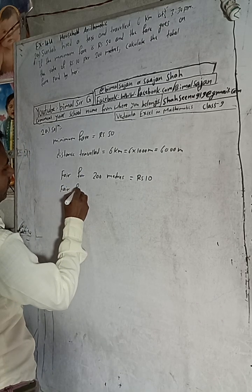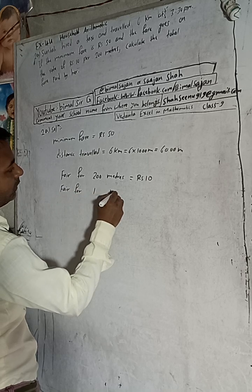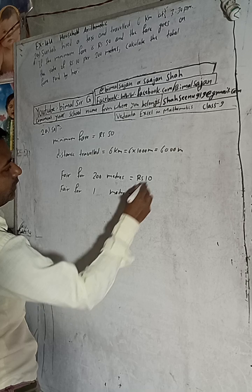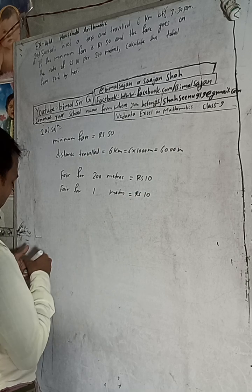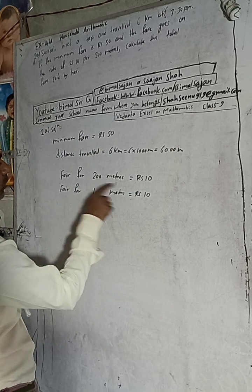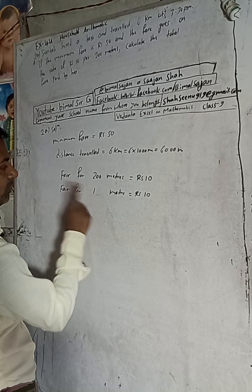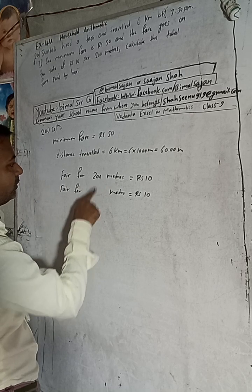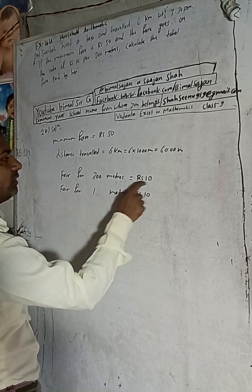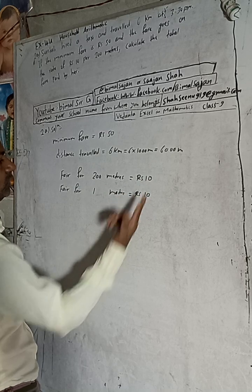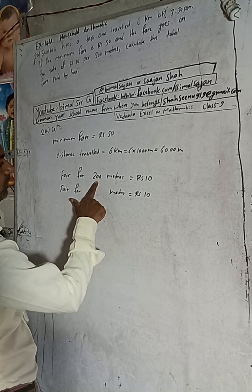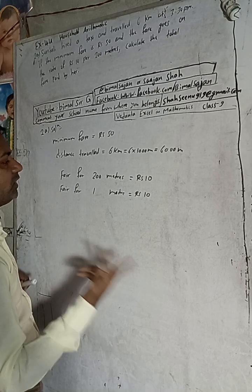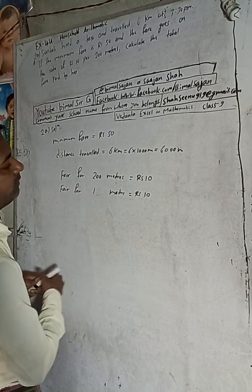Fare for 1 meter is equal to Rs 10 divided by 200. Because when distance decreases from 200 meters to 1 meter, we decrease — meaning we divide. For 200 meters it is Rs 10, so for 1 meter it is less, which means we divide by 200.